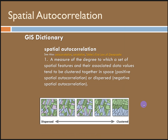So what is spatial autocorrelation? From Esri's GIS dictionary, it is a measure of the degree to which a set of spatial features and their associated data values tend to be clustered together in space — positive spatial autocorrelation — or dispersed in space — negative spatial autocorrelation. It is basically the correlation of a variable with itself through space. One of the main reasons spatial autocorrelation is important is because statistics rely on the assumption that observations are independent from one another, and if autocorrelation exists in a map, this fundamentally violates that assumption.